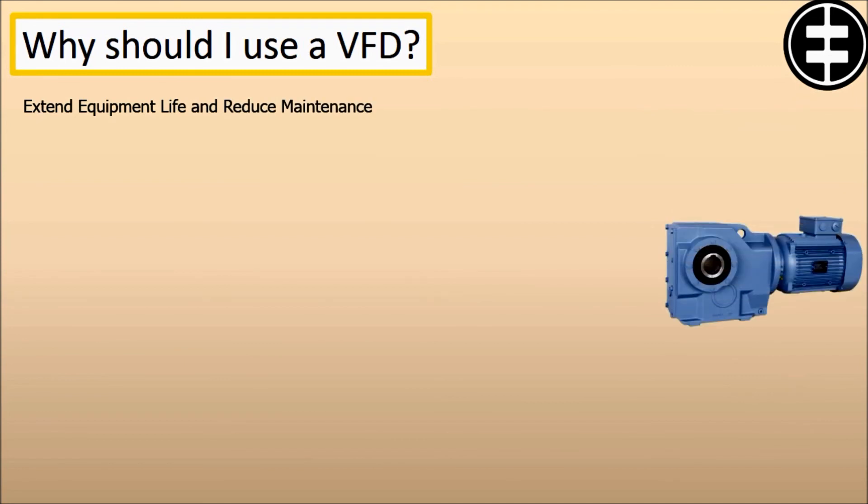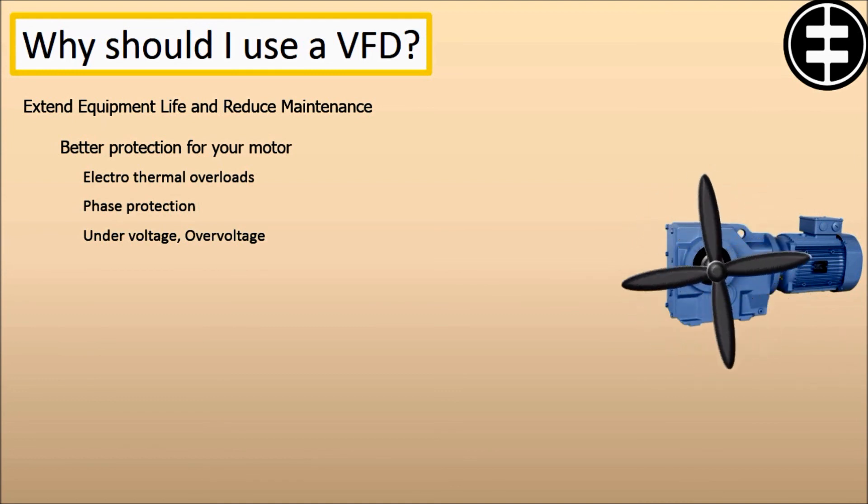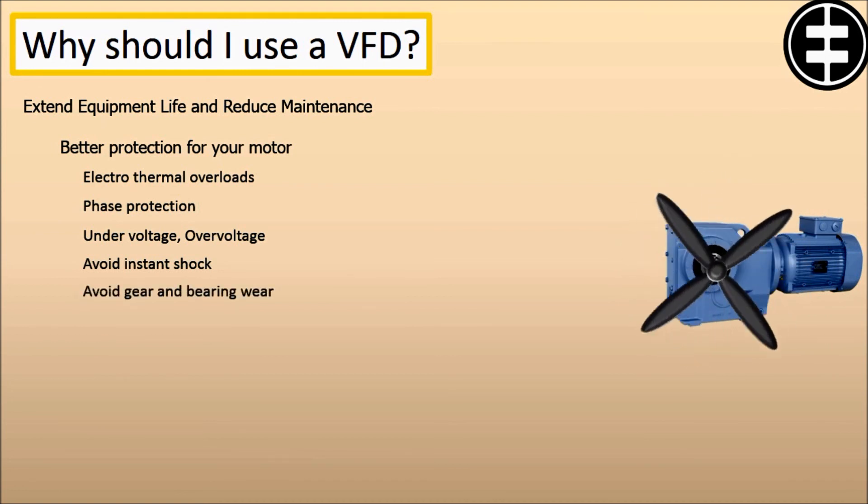Extend equipment life and reduce maintenance. Your equipment will last longer and will have less downtime due to maintenance when it's controlled by VFDs ensuring optimal motor application speed. Because of the VFD's optimal control of the motor's frequency and voltage, the VFD will offer better protection for your motor from issues such as electrothermal overloads, phase protection, undervoltage, overvoltage, etc. When you start a load with a VFD you will not subject the motor or driven load to the instant shock of across the line starting, but can start smoothly, thereby eliminating belt, gear, and bearing wear. It is also an excellent way to reduce or eliminate water hammer since we can have smooth acceleration and deceleration cycles.